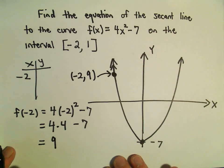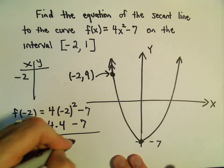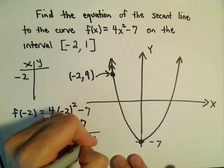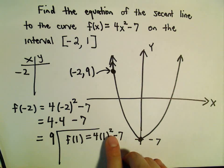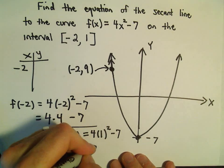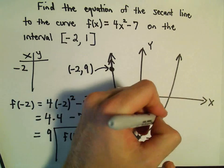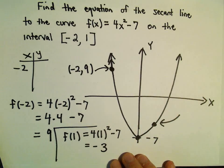We can plug in the value 1 to get the y-coordinate there. So if we plug 1 in, we'll get 4 times 1² - 7. Well, 1² is just 1 times 4 is 4 minus 7. So 4 minus 7 will give us -3. Maybe we can stick that point over here. So that's going to be the point (1, -3).